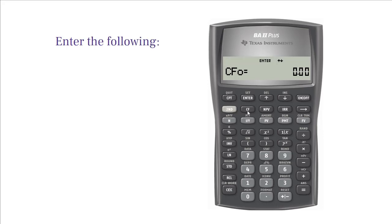Press CF and write negative 25, then press Enter. Notice that your calculator screen also says Enter. Press down arrow.